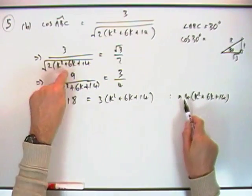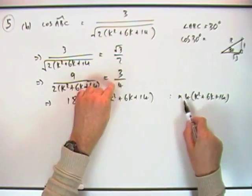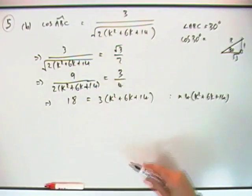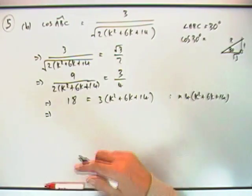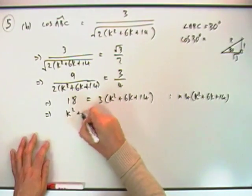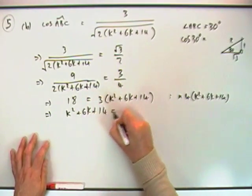That went into it twice, so that's why the top was doubled. Next thing I'll do is divide everything by 3 and write it the other way around, so I've got k²+6k+14 = 6.